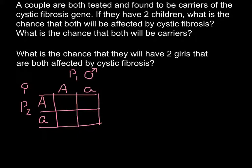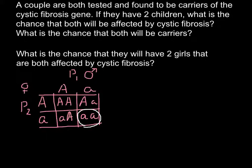In the first square we have capital A, capital A, and that means that this child is going to be healthy. Here we have capital A and small a, and this child is also going to be a carrier. And here we have small a, small a, and that means that this is going to be an affected child.